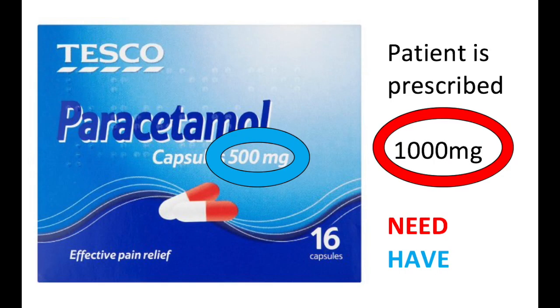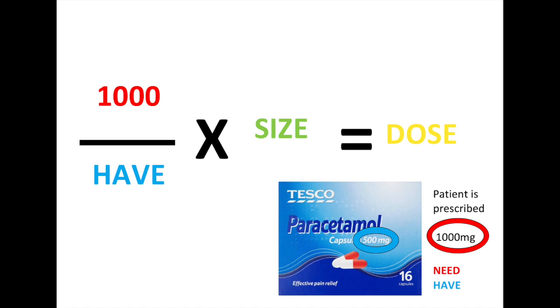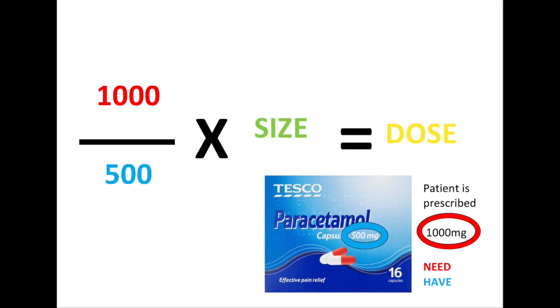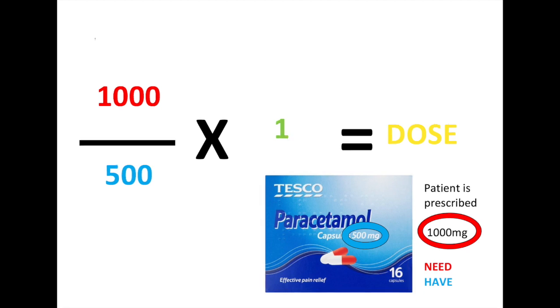We'll start with tablets — a basic one: paracetamol. Paracetamol usually comes in 500 milligram tablets and the usual dose is 1000 milligrams or one gram. Our patient is prescribed a 1000 milligram dose; tablets come in 500 milligrams. N for Need is 1000 milligrams, H for Have is 500. You divide 1000 by 500 to get 2, then multiply by 1 because that's how many tablets holds 500 milligrams. 2 times 1 is 2, so you give 2 tablets.